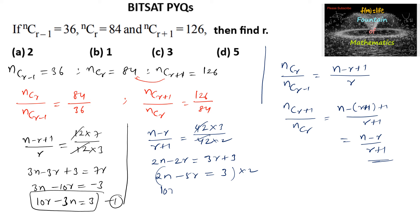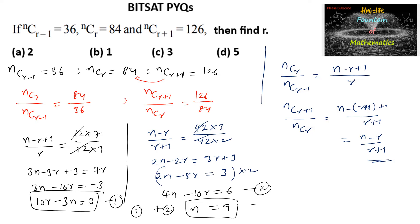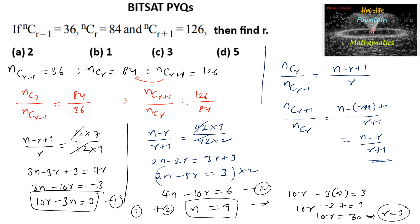Multiplying equation 2 by 2 gives 4N - 10R = 6. Adding equation 1 (10R - 3N = 3) and this result: 4N - 3N = N, and 10R - 10R cancels, giving N = 9. Substituting N = 9 into equation 1: 10R - 27 = 3, so 10R = 30, and R = 3. The answer is option C.